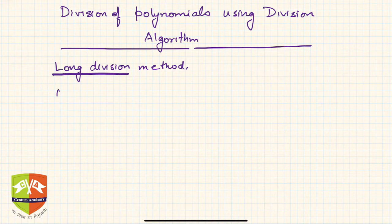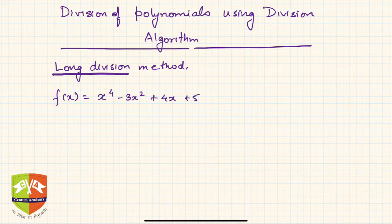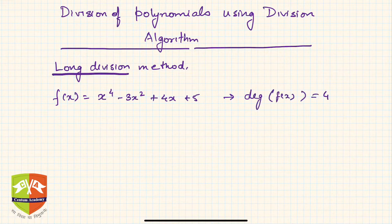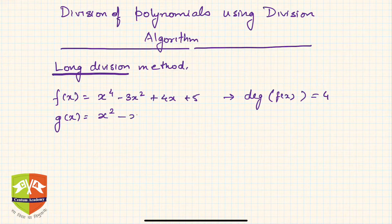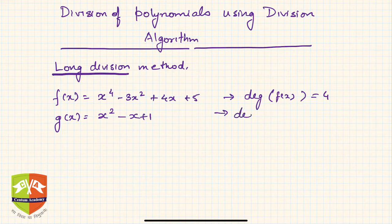Let us say the question is f(x) = x⁴ - 3x² + 4x + 5. Mind you, there is no x³ term in it, so the degree of f(x) is 4. I am dividing this by g(x) = x² - x + 1 — the same example from the previous session. In the last session we did long division; this session we are not going to do that, we are going to use the division algorithm.